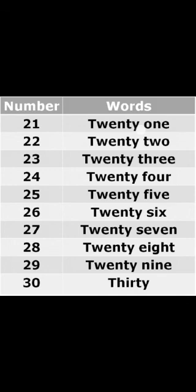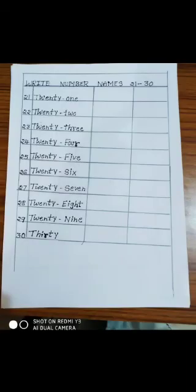What is the spelling of 30? T-H-I-R-T-Y. So learn all these spellings. So children, today's homework: in your maths copy you have to do this worksheet. See this — you have to write the number names from 21 to 30 in your maths copy. Write today's date, write the heading 'Number Names 21 to 30', and write all these names in your maths copy.